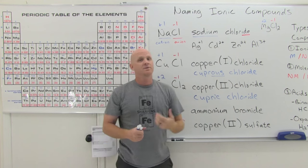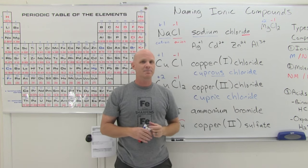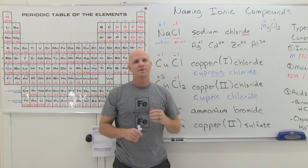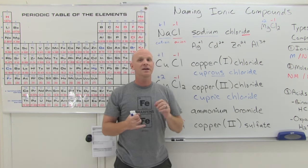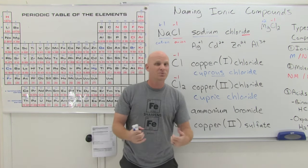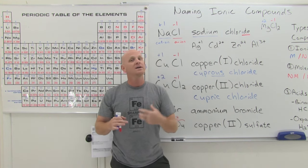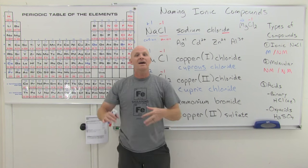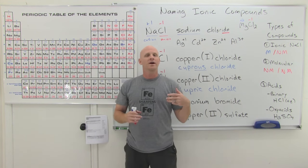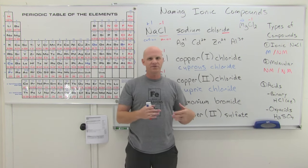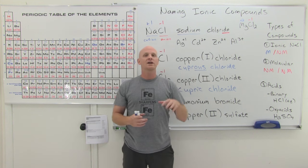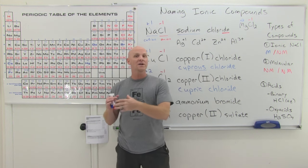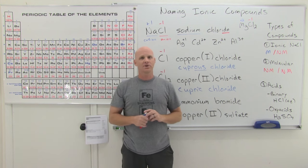We've covered a good set of examples for naming ionic compounds. In the next lesson we'll name molecular compounds using a different set of rules. In the following lesson we'll name both binary acids and oxyacids, each with their own rules. The key challenge is not just how to name these compounds, but identifying which type of compound you have so you know which set of rules to follow.